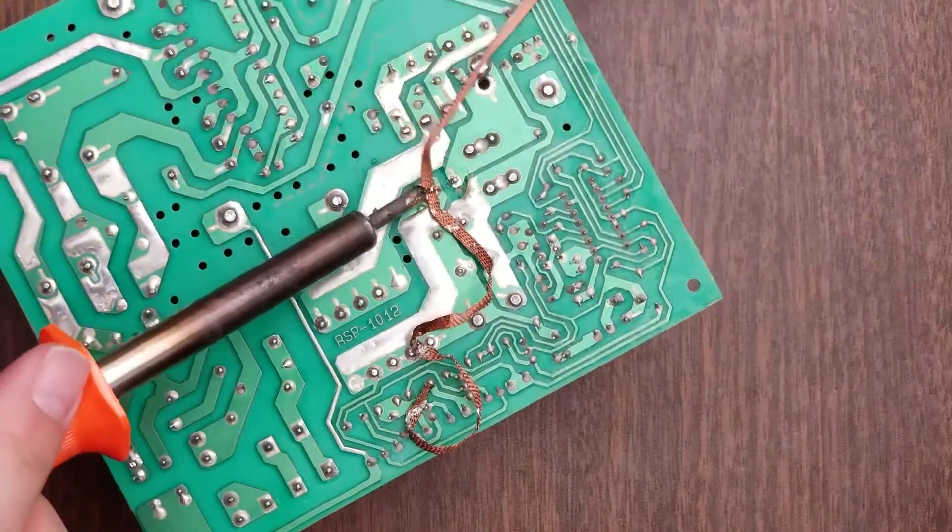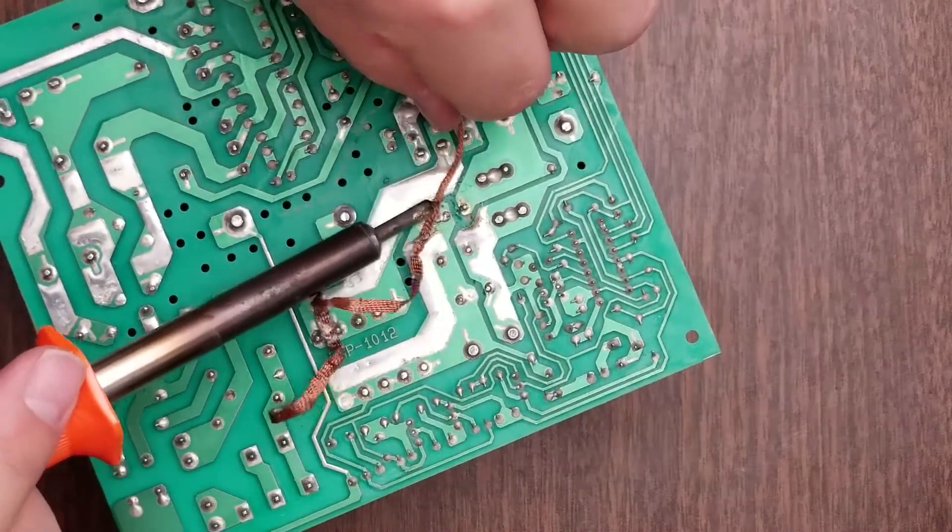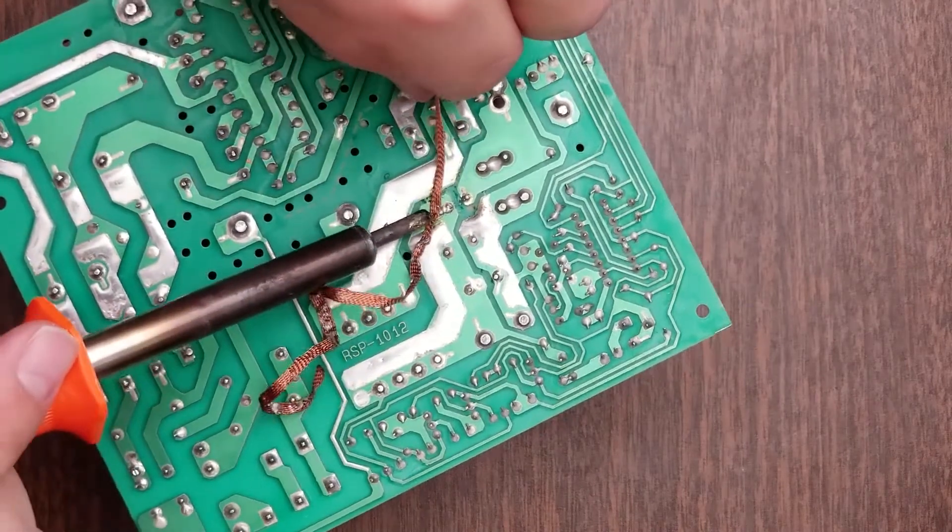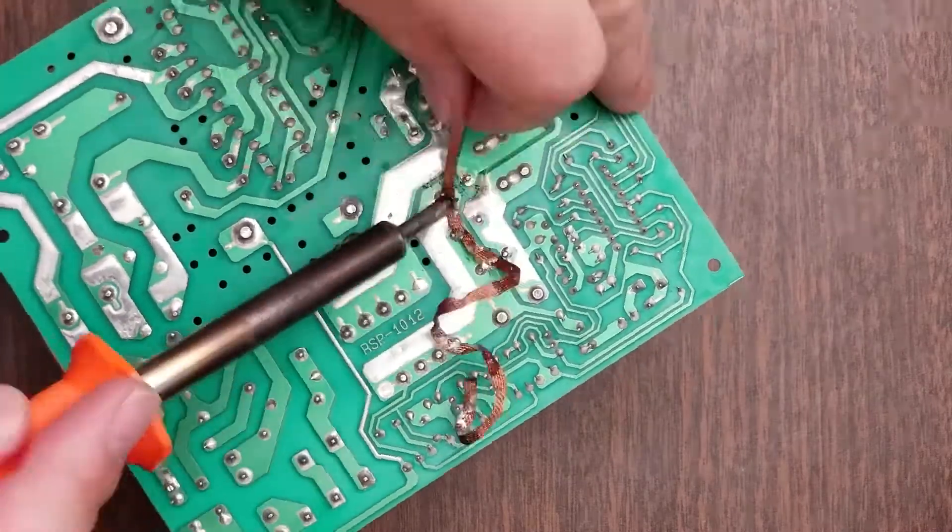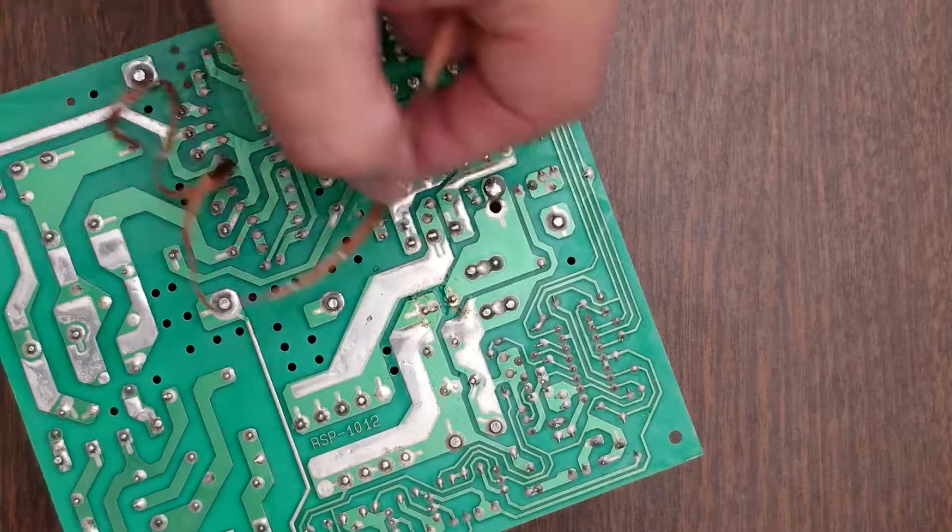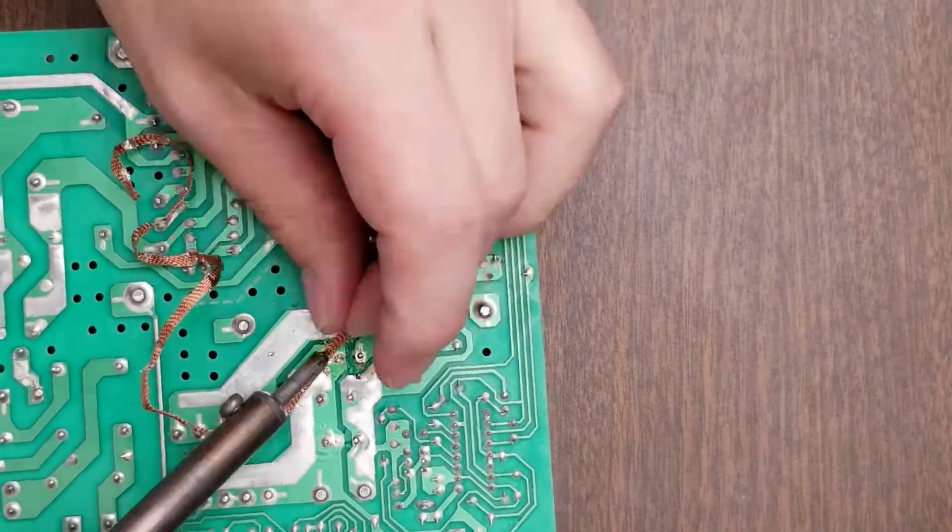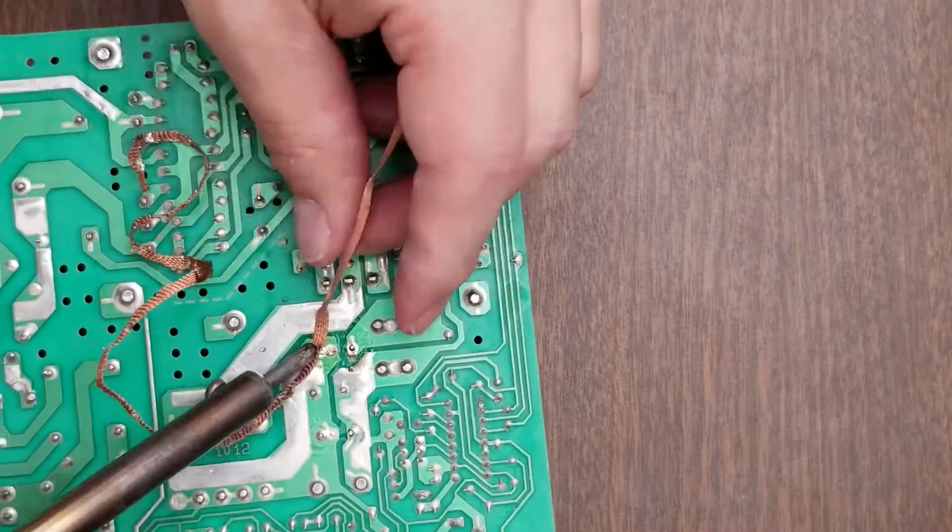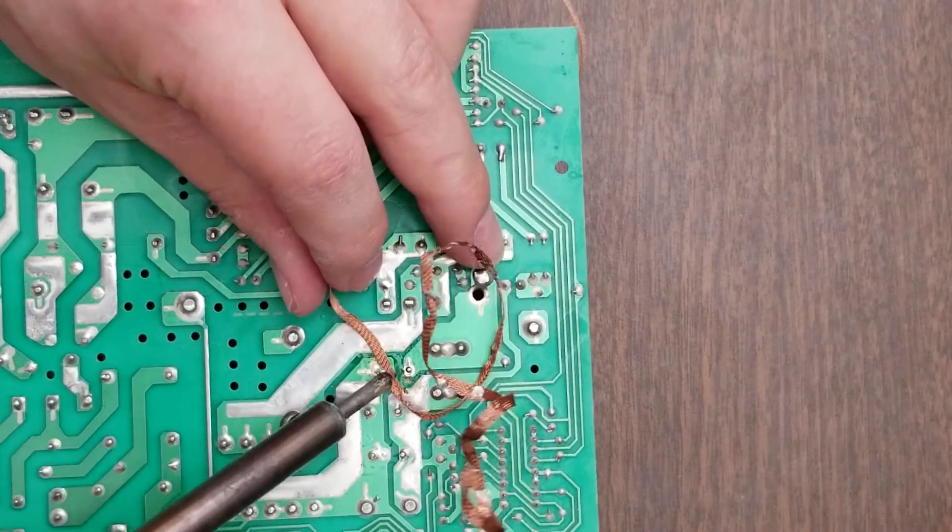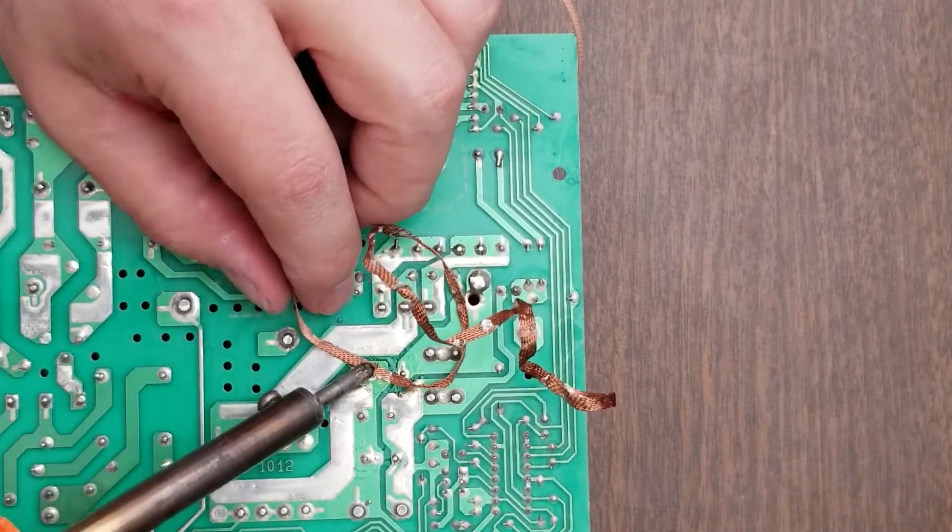Alright, more flux added. Yeah, there we go, now things are starting to flow a little better. Might need to invest in some new solder wick braid.